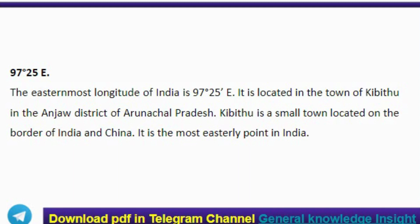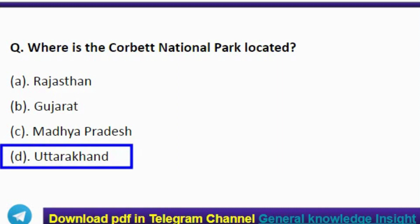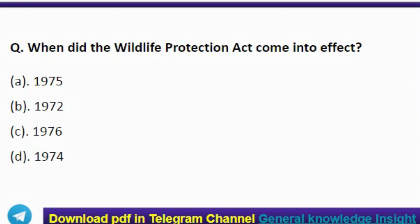Next question: where is the Corbett National Park located? The correct answer is option T, Uttarakhand. Corbett National Park is located in the Nainital district of Uttarakhand state, India. It is the oldest national park in India and is known for its tigers. The park is home to a variety of other animals including leopards, elephants, rhinoceros, and deer.